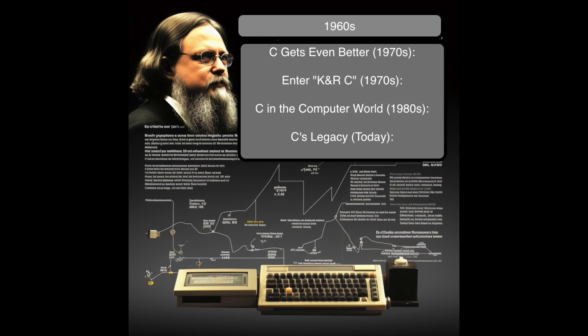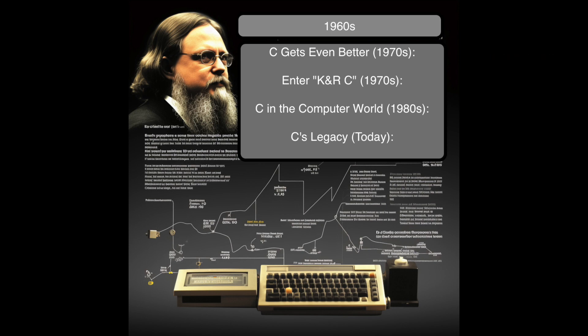Let's take a quick journey through the history of C. A long time ago in the 1960s, a bunch of super smart people needed a way to talk to computers, but each computer spoke a different language, so they created C — like a universal translator for computers. C got even better in the 1970s; it started to grow and improve, and more people used it because it was so friendly to computers. Two smart folks named Kernighan and Ritchie wrote a special book about C, called K&R C, which became the C superhero manual teaching everyone how to use it. In the 1980s, C became super popular — people used it to build computer games, make operating systems, and create cool software.